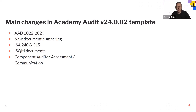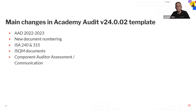The most significant thing really is that this is the first time ISA 240 and ISA 315 are applicable to most Academy year ends. Obviously they started on 31st of August, so last year wasn't relevant — this year it is. So that's all now been put in. I expect most of you are already familiar with the changes which have been there for the past nine or so months.